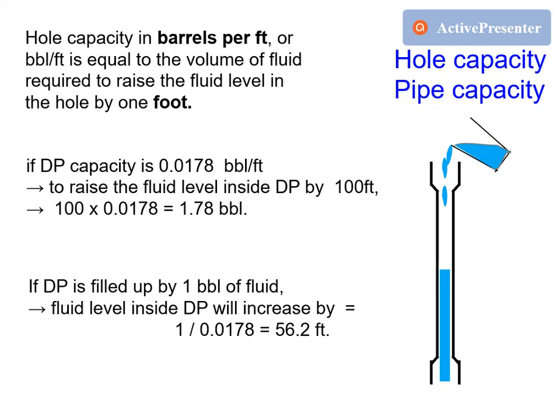If the drill pipe is filled up with 1 barrel of fluid, then the fluid level inside the drill pipe will increase by 1 divided by 0.0178, equal to 56.2 feet.